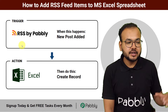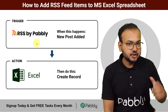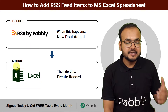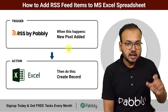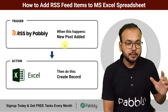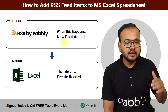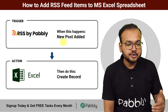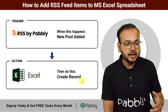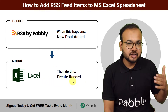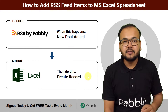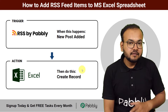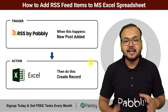Here you can see we are using RSS by Pabbly, a feature of Pabbly Connect, in the trigger section, and Microsoft Excel as the action application. Whenever a new RSS feed post is posted on any website, the same post data like the link and title of the post will be created as a record in Microsoft Excel automatically. To make this happen we are using Pabbly Connect, which is an automation tool, and we can set up this automation without any coding. Let me show you how.